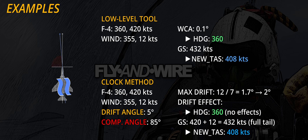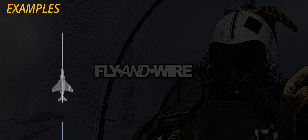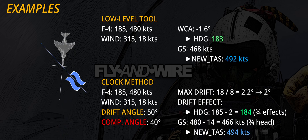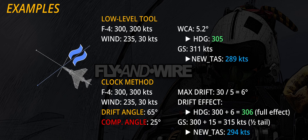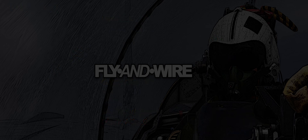Let's see a few examples. All of them assume zero magnetic variation. To make things more interesting, I compared the values reported by the tool I developed versus the clock method. I'm actually surprised by how close the results are and how easily the new course and speed to fly are obtained.